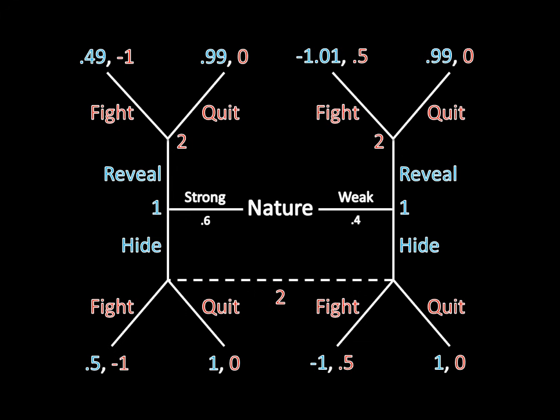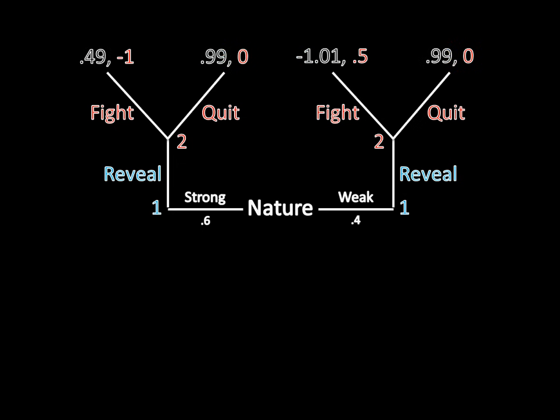I said that we're going to start with a simple version of a signaling game, and half of this game tree is actually very simple. Think about what's going on up top. If Player 1 has revealed his type — revealed whether his tank drivers were competent or not — to Player 2, then Player 2 directly observes that information and doesn't face any sort of uncertainty anymore.